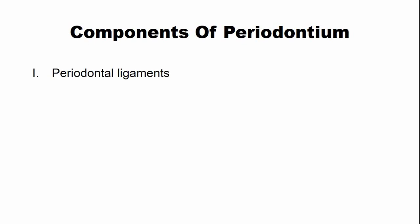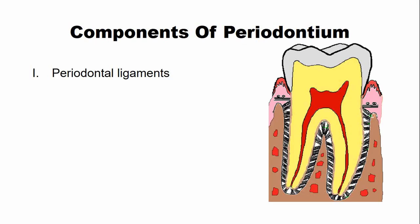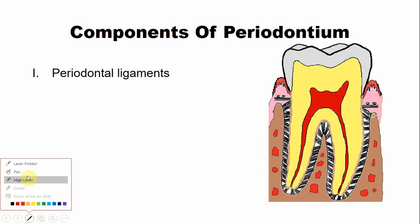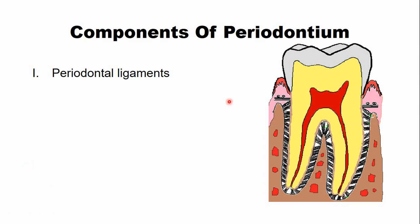The first component is the periodontal ligaments. This is a diagram of the longitudinal section of a tooth, and these structures shown here are the periodontal ligaments.